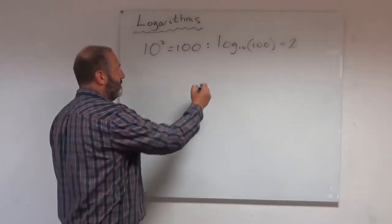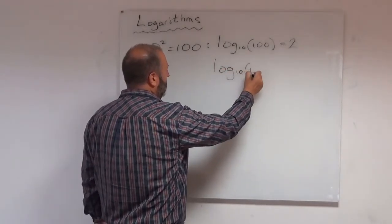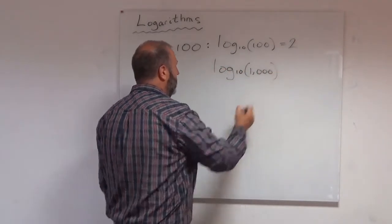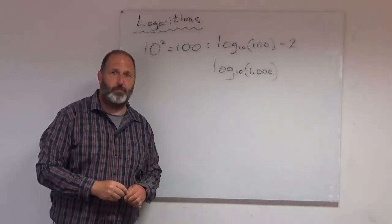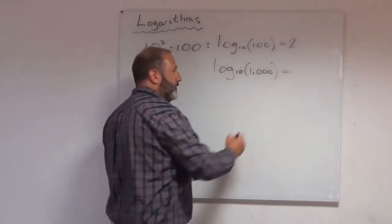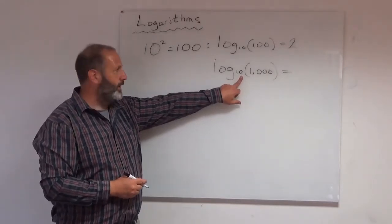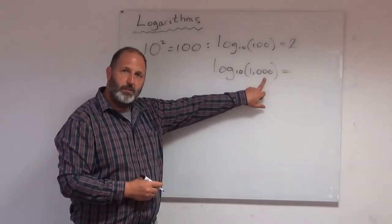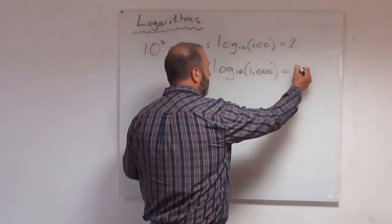Let's do one or two more examples. We've got a question like this: log to the base 10 of 1,000. So what do we ask to find our solution? We need to know, I wonder what power we raise 10 by that would give us 1,000. Of course, 10 times 10 times 10 is 1,000. So it's 3.